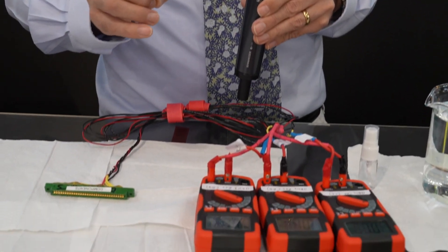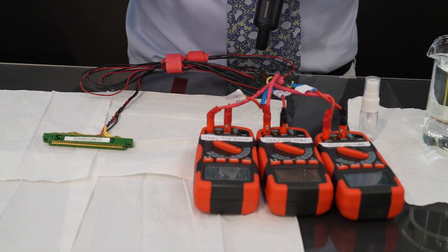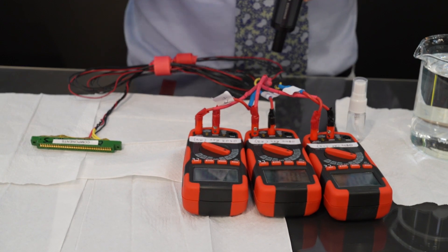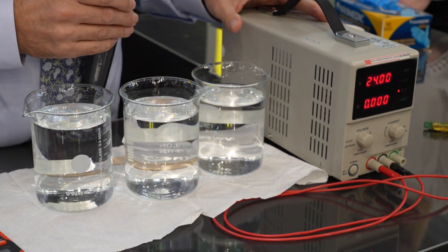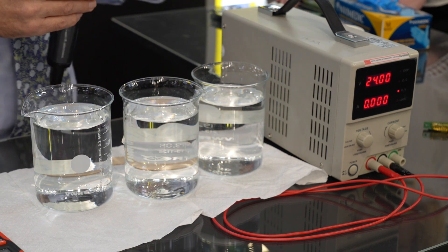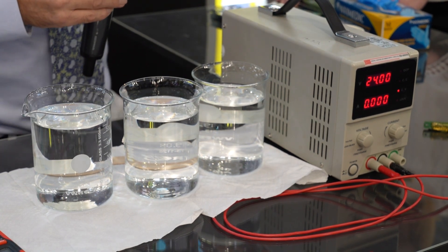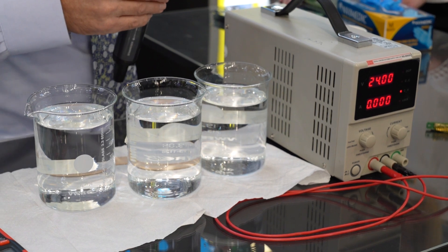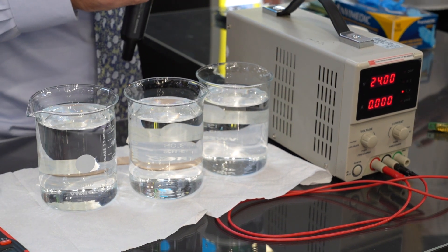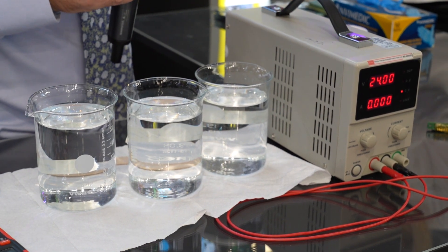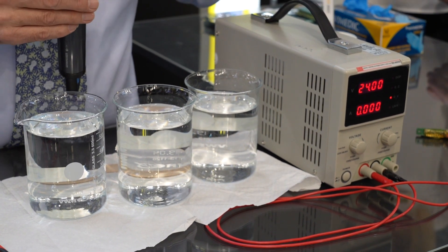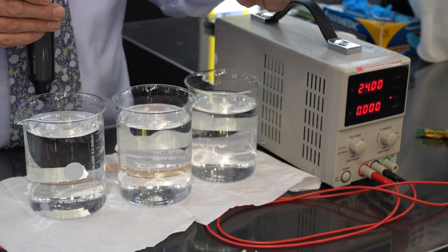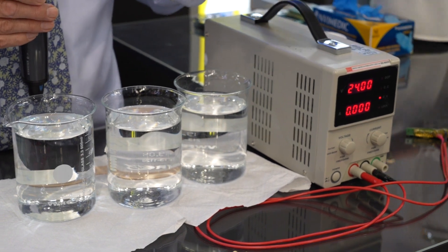So the team at Humaseal have been working to develop new coatings which we are calling SEC coatings, standing for Sharp Edge Coverage Coatings. I will talk even louder. So what I'm going to demonstrate first is a board which has got no coating on at all. This board has no conformal coating on it.